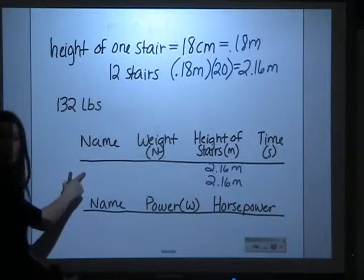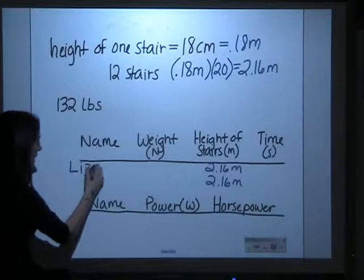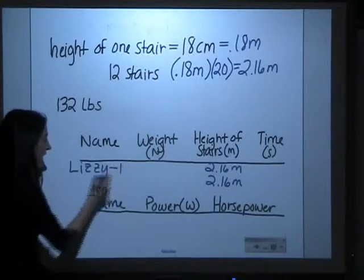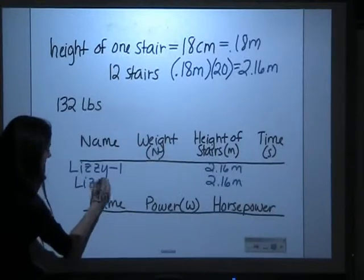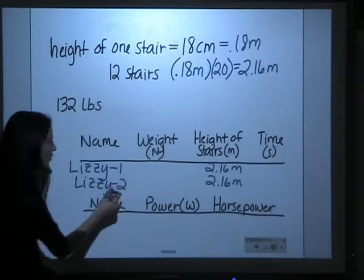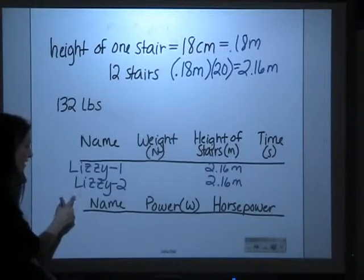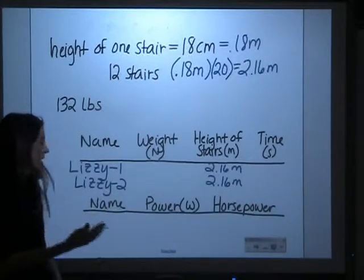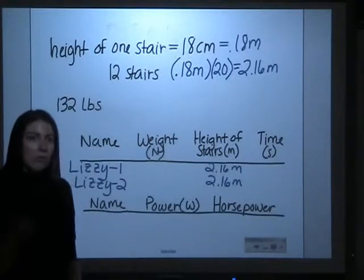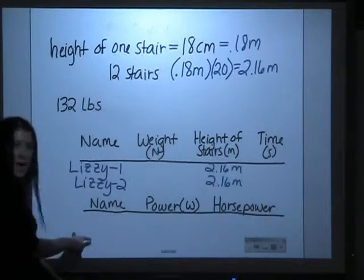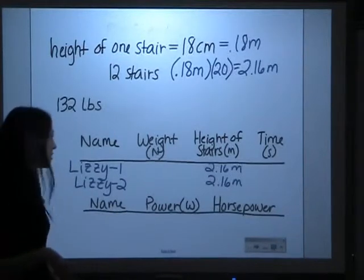Now for the name. What I want you to write is your partner's name or the runner's name. In this case, we had Lizzie. And then put dash 1 representing her first trial, and then you'll do the same thing. Lizzie 2 representing her second trial. We only did 2, but then you would have a third that says Lizzie dash 3. And then remember, you'll get data from two other runners, so you should end up having nine names here, because you'll have three runners with each having three trials.